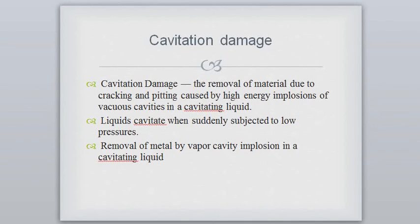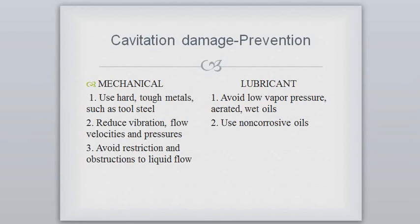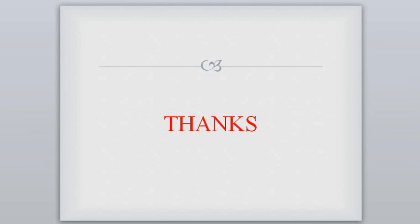Next is cavitational damage. Cavitational damage is a removal of material due to cracking and pitting caused by very high implosion of vapor cavities in a cavitating liquid, when liquid cavitates when suddenly subjected to low pressure. Preventions: mechanically, use hard tough metal such as tool steel, reduce vibration, flow velocity and pressure, and avoid restriction and obstruction of liquid flow. For lubricant, avoid low vapor pressure and use non-corrosive oil. These are the wear analysis, different types of wear, and the preventions that should be taken when wear occurs.